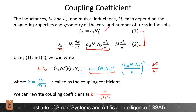This product L1 times L2 equals M squared over k squared, where k is the coupling coefficient relating Cm to C1 and C2, defined as k equals Cm divided by the square root of C1 times C2. We can also express the coupling coefficient in terms of the self-inductances and mutual inductance as k equals M divided by the square root of L1 times L2.